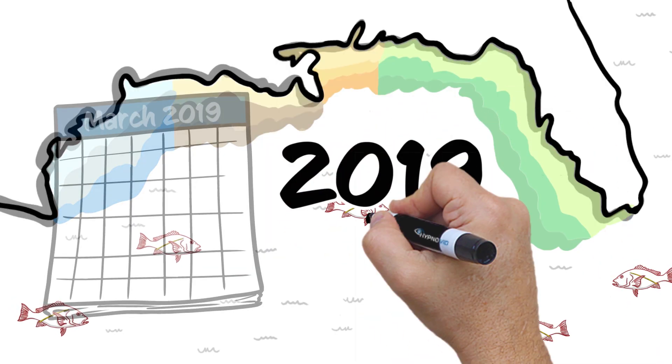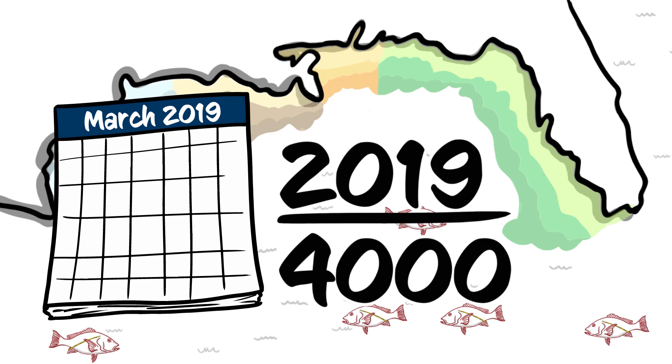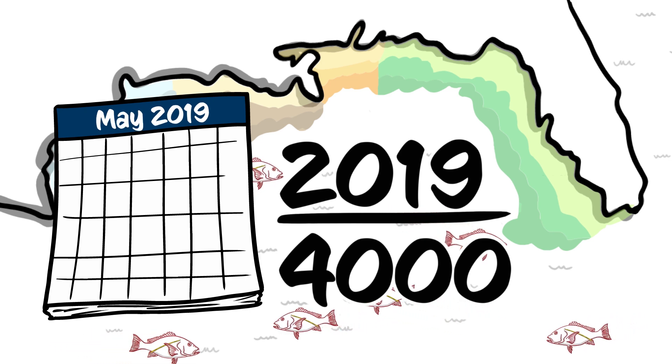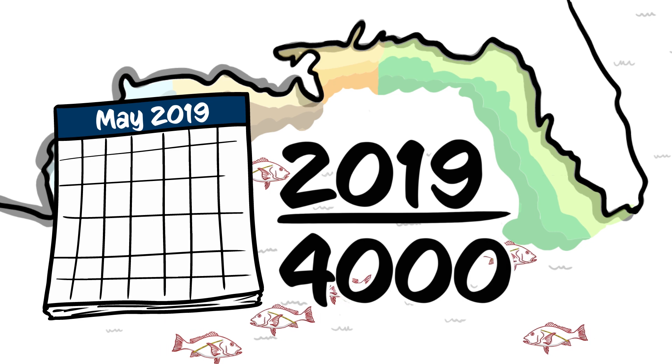In 2019, 4,000 legal-sized red snapper will be tagged and released across the U.S. Gulf of Mexico immediately prior to the Gulf States' red snapper recreational fishing seasons.